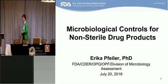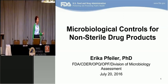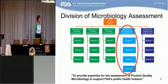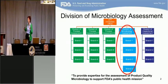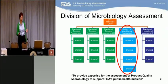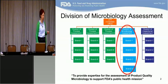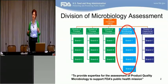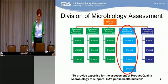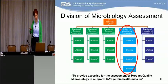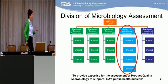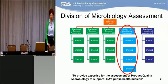As Bob already mentioned this morning, the Division of Microbiology Assessment is part of the Office of Process and Facilities. While the bulk of work that we do involves the review of applications for sterile products, we do also assess and participate in the assessment of non-sterile products as well. That overarching view of the field has given us some insight into the unique risks that these products pose. Since we're not all microbiologists, we're going to start out with just a couple of really brief Micro 101 slides so that we're all starting off on the same footing.